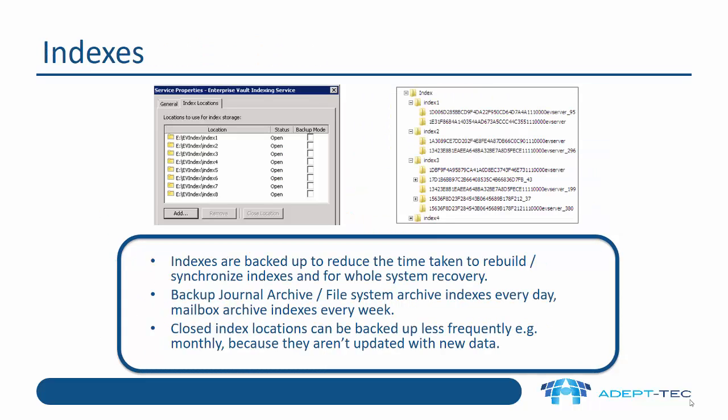The reason for backing up indexes is to reduce the time taken to rebuild or synchronize indexes and for a whole system recovery. For very large archives like your journal archives and file system archives, it's recommended to back up the indexes every day. For mailbox archive indexes, you could back them up every week. If you decide to close index locations, these can be backed up less frequently — for example, monthly — because they aren't updated with new data.